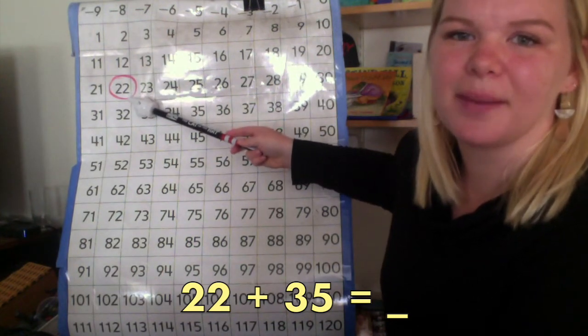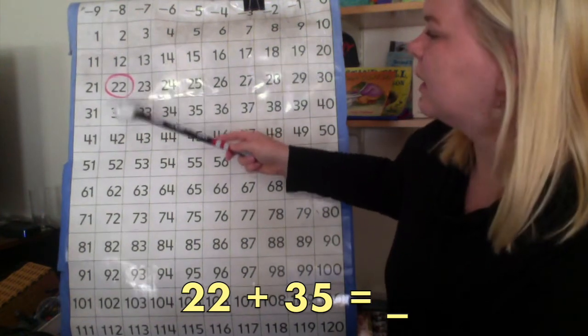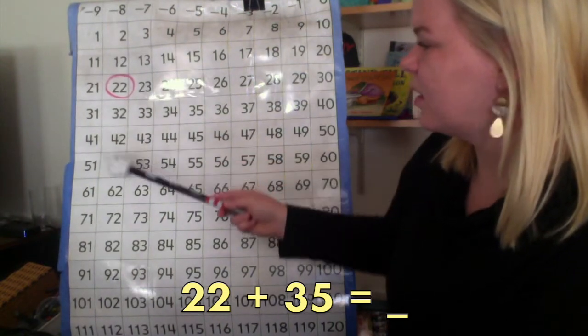I start at 22, and I need to count up 35. So, let's first start by counting up by tens. 10, 20, 30.